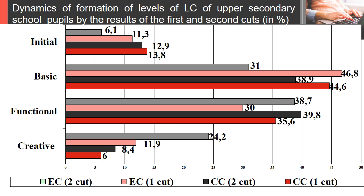On this slide we would like to show you the comparative indicators of the level of educational achievements of students in literature as a result of our research. The dynamics of changes in indicators reflects positive trends in the competence development of students in the formation of levels of literary competence.